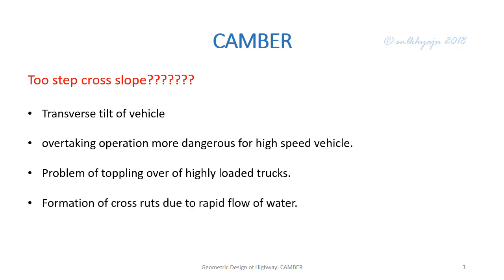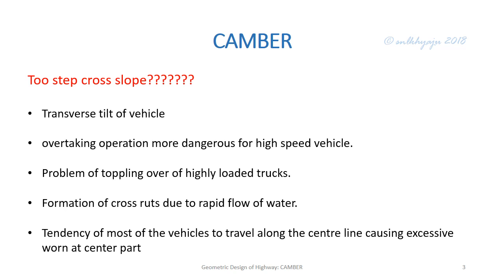Formation of cross ruts occurs due to rapid flow of water — during rainy seasons, if the camber slope is too steep, water flows laterally at higher speed, and that higher speed of water forms cross ruts on the pavement surface. There is also a tendency for vehicles to travel along the center line, causing excessive wear at the center part.